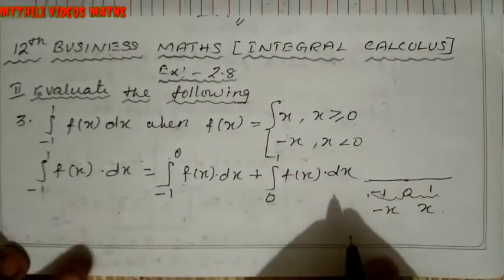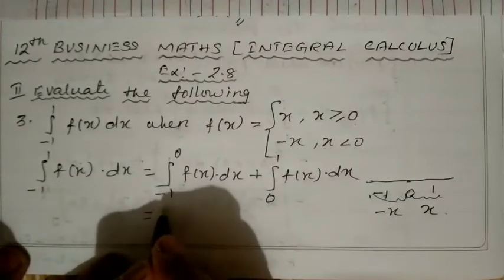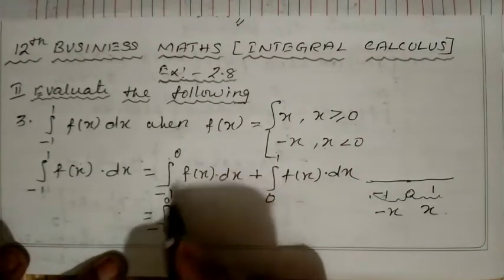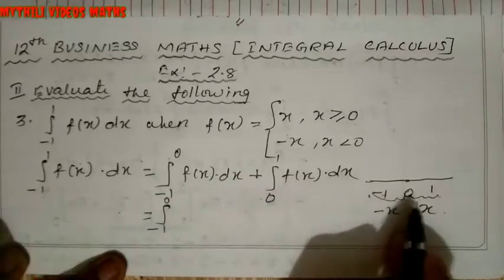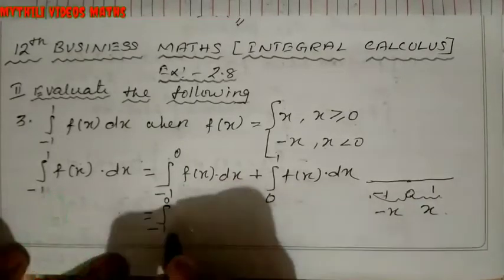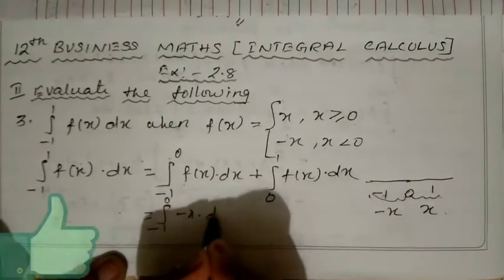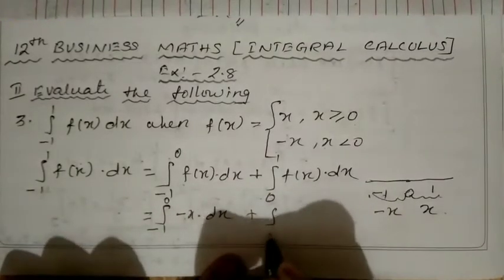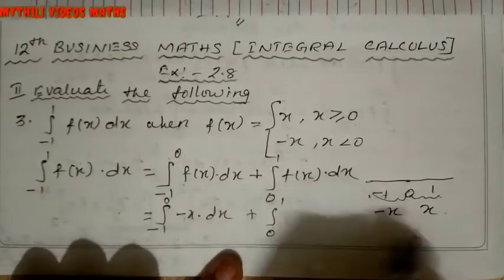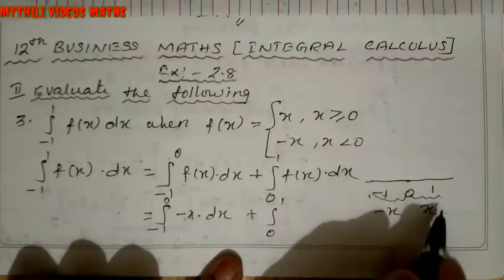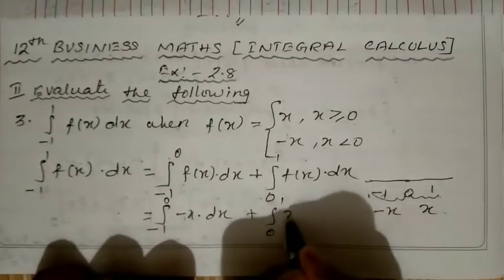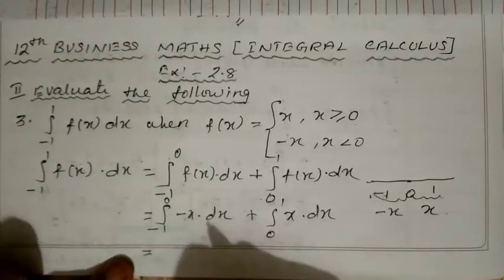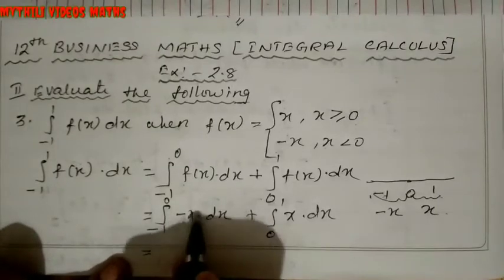Then plus integral from 0 to 1 of f(x) dx. Now, from -1 to 0 we use the function -x, so it becomes integral from -1 to 0 of -x dx. And from 0 to 1 we use x, so it becomes integral from 0 to 1 of x dx.